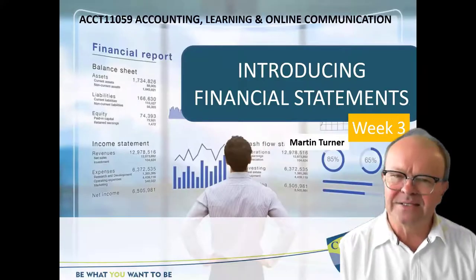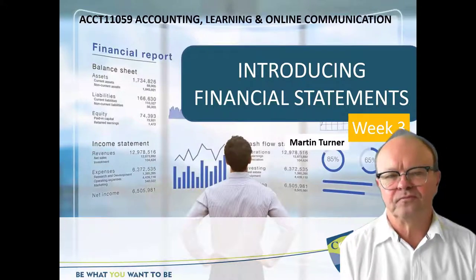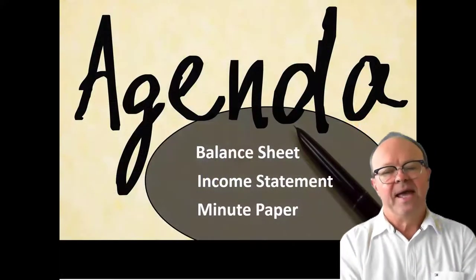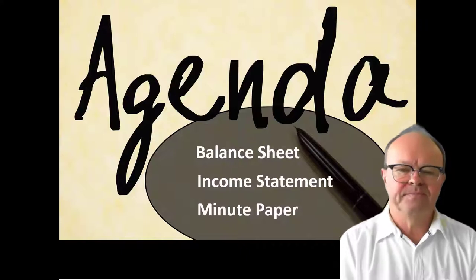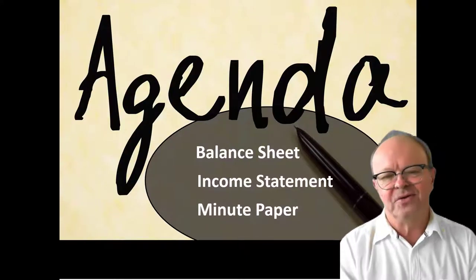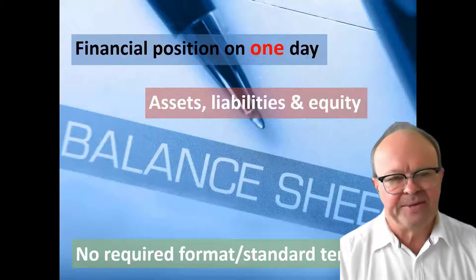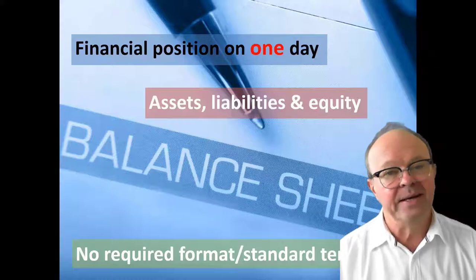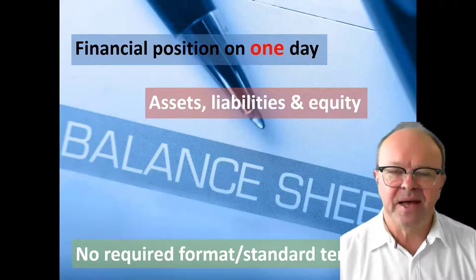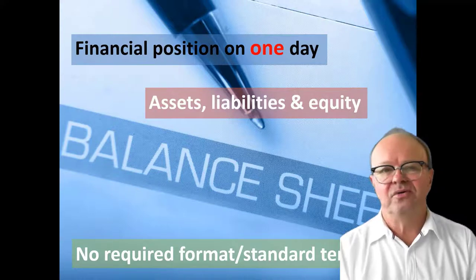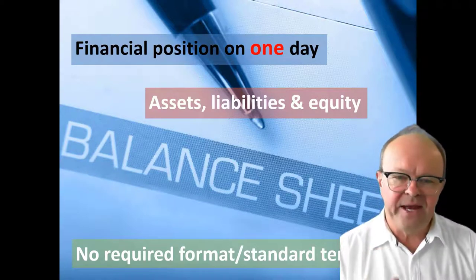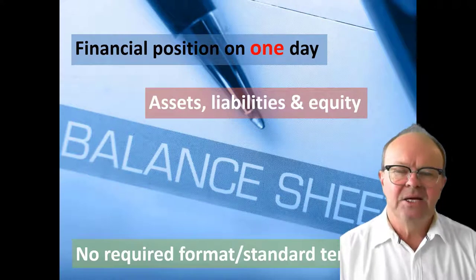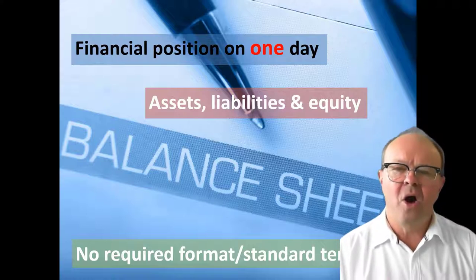That's the entity concept, accrual accounting and double entry accounting. In this week, our agenda is to look at the balance sheet and the income statement, and then we'll do the minute paper. The balance sheet is the financial position of our firm on one day — just one day. For Ryman Healthcare it's the 31st of March; for your firm it might be the 30th of June. It shows the assets, liabilities and equity of our firm on that one day.